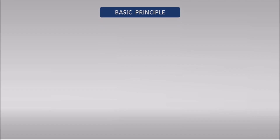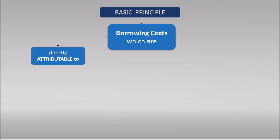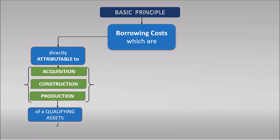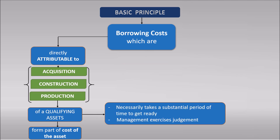The basic and most important principle of IND AS 23 says that borrowing costs which are directly attributable to acquisition, construction, and production of a qualifying asset form part of the cost of that asset. Borrowing costs are interest and other costs that an entity incurs in connection with the borrowing of funds. A qualifying asset is an asset that necessarily takes a substantial period of time to get ready for its intended use or sale. This period is not defined in IND AS; management exercises judgment when determining which assets are qualifying assets.